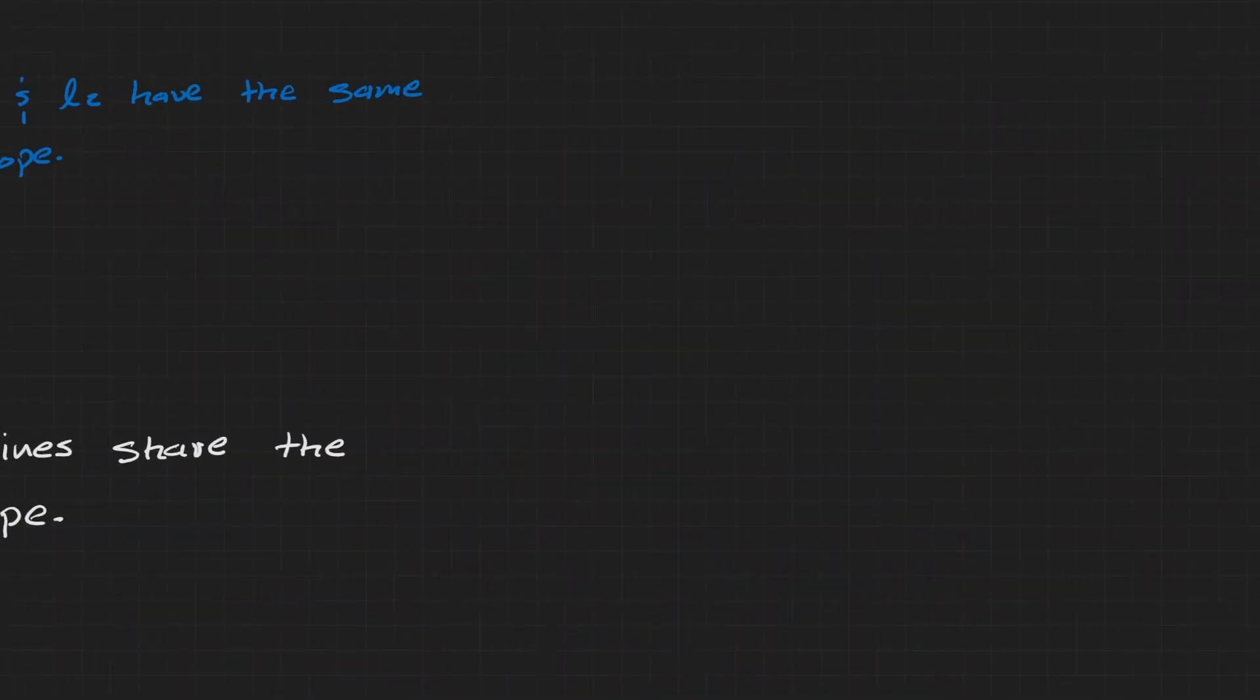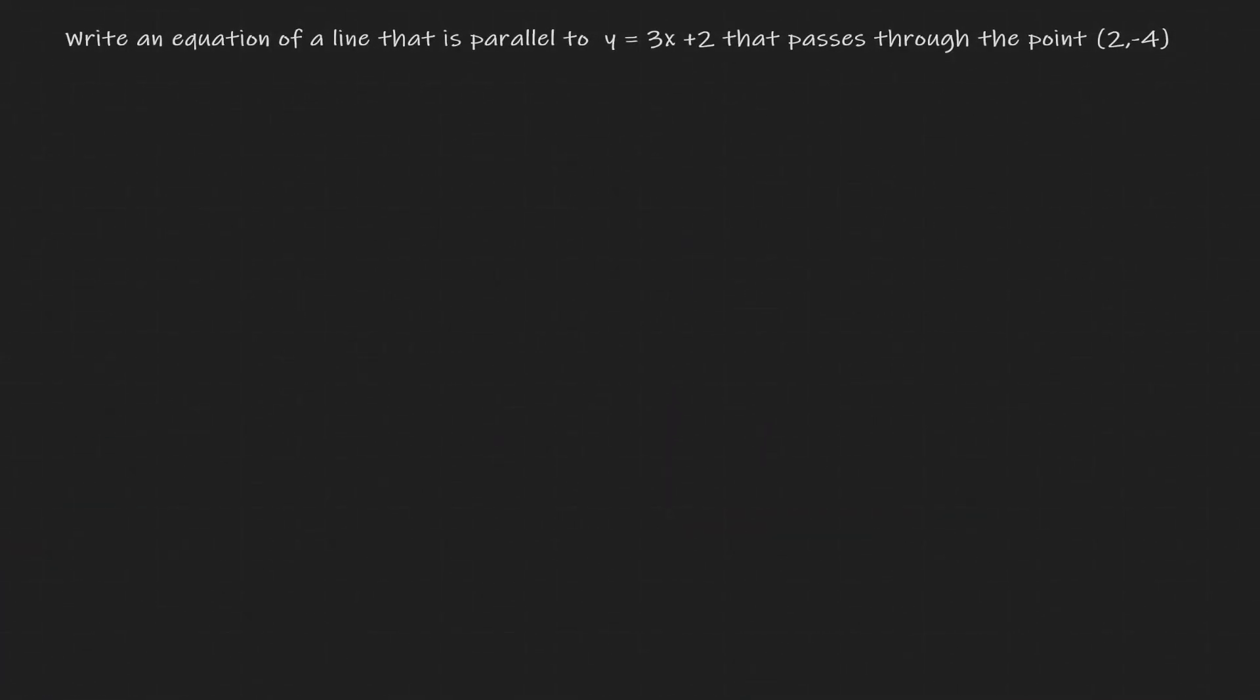Let's take a look at some examples. So let's understand the situation here. We want to write an equation of a line that is parallel to the line y = 3x + 2. But in addition, that line needs to pass through the point (2, -4). So let's organize this information.